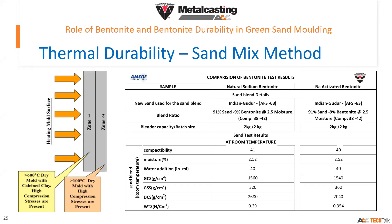It is very important for a quality person to keep a standard process, standard equipment, and standard sand. Even if you change from 63 AFS number to 55 or 60 AFS number, results could change. We got a GCS of around 1560 on natural sodium bentonite, whereas activated bentonite showed GCS of 1540, GSS of 320 and 360. Natural sodium bentonite showed slightly lower or equal GCS, but better BCS and WTS performance over activated bentonite.